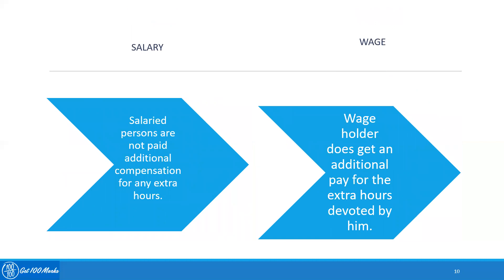Salaried persons are not paid additional compensation for any extra hours worked. A wage holder, however, does get additional pay for the extra hours devoted by them.